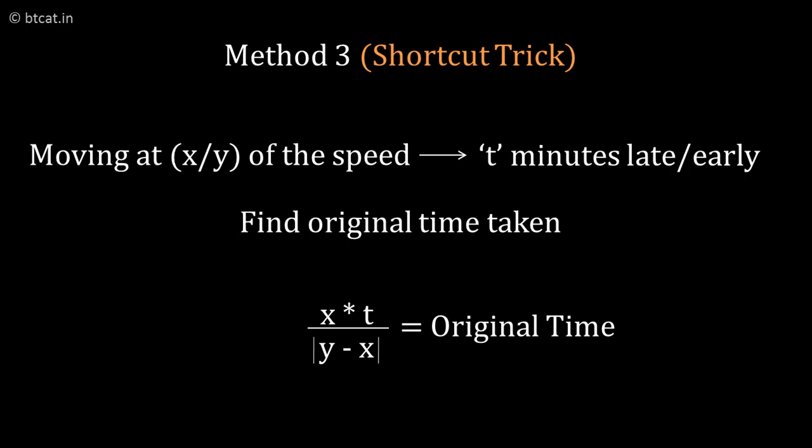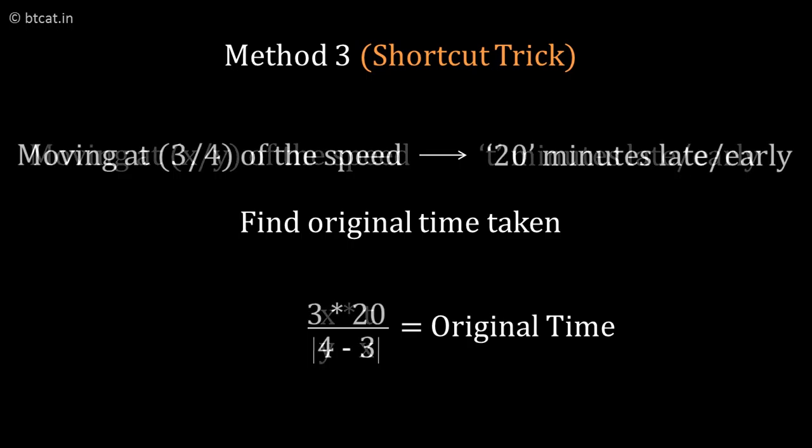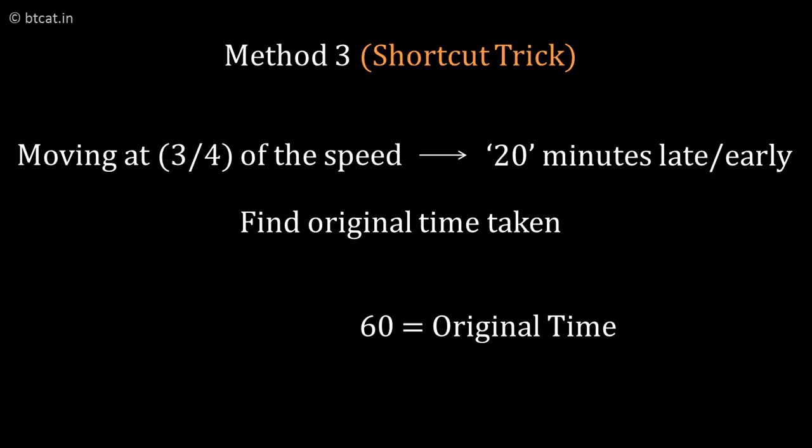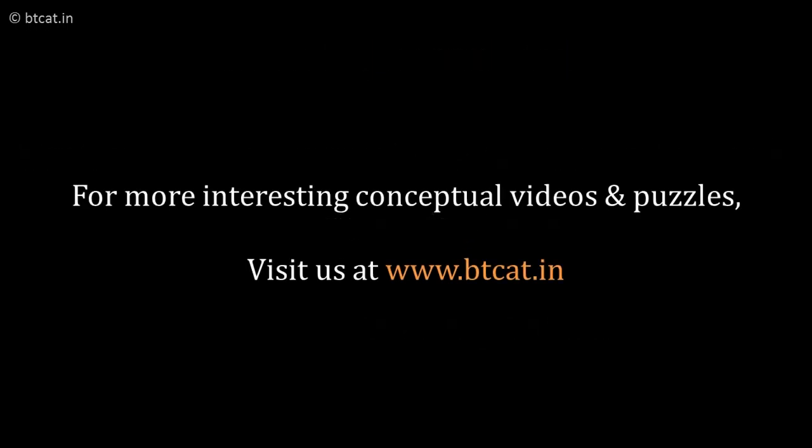This is the formula: x into t divide by mod of y minus x. I will directly get the answer. Let us apply here, 3 by 4 of the speed, 20 minutes late. So I do 3 into 20 divide by 1, I get 60 minutes as the original time.